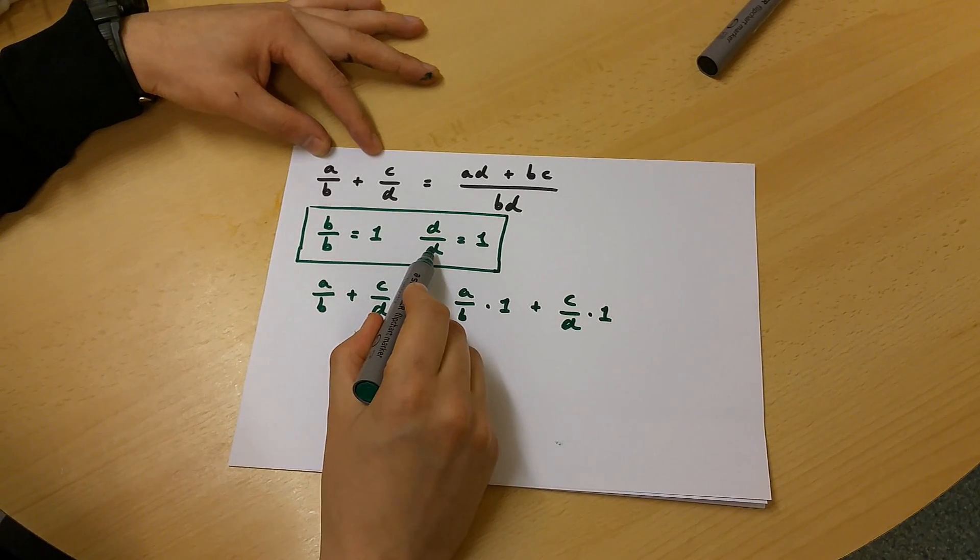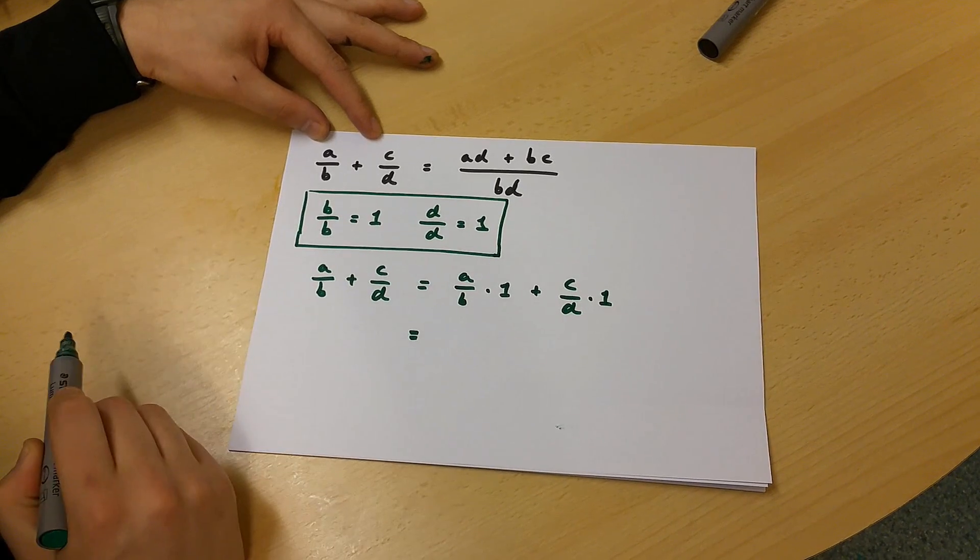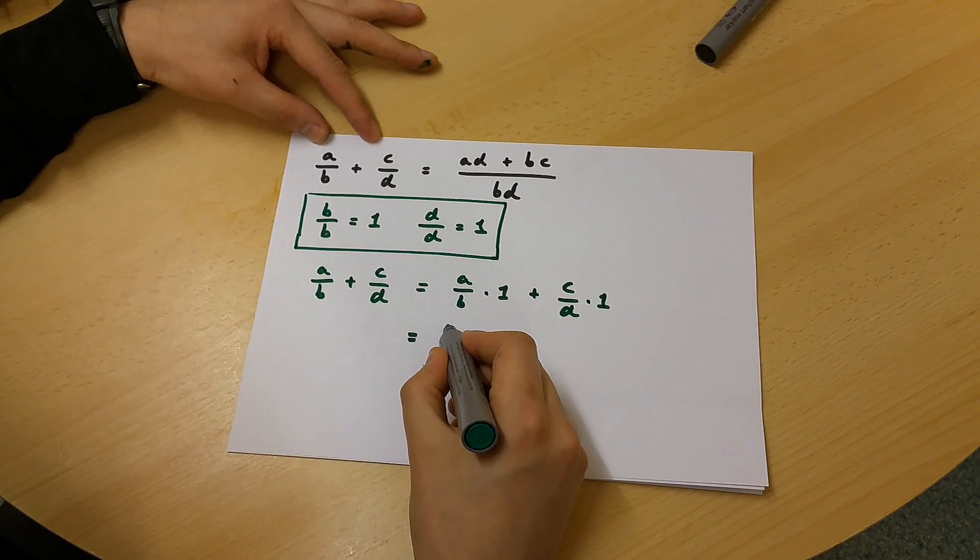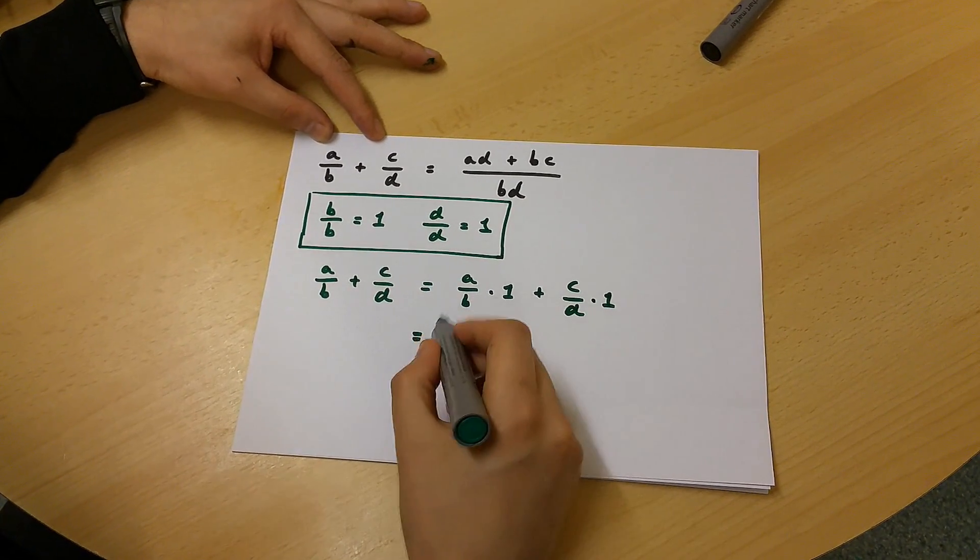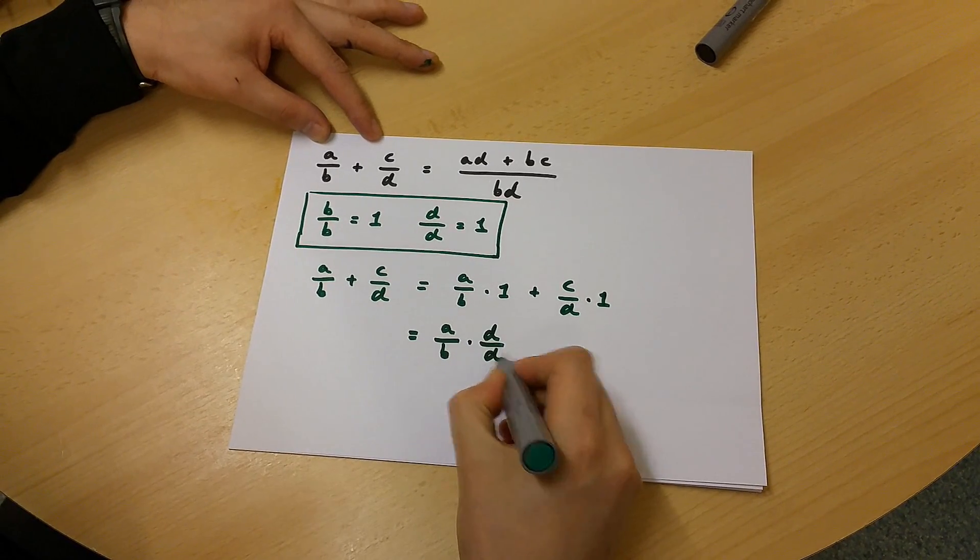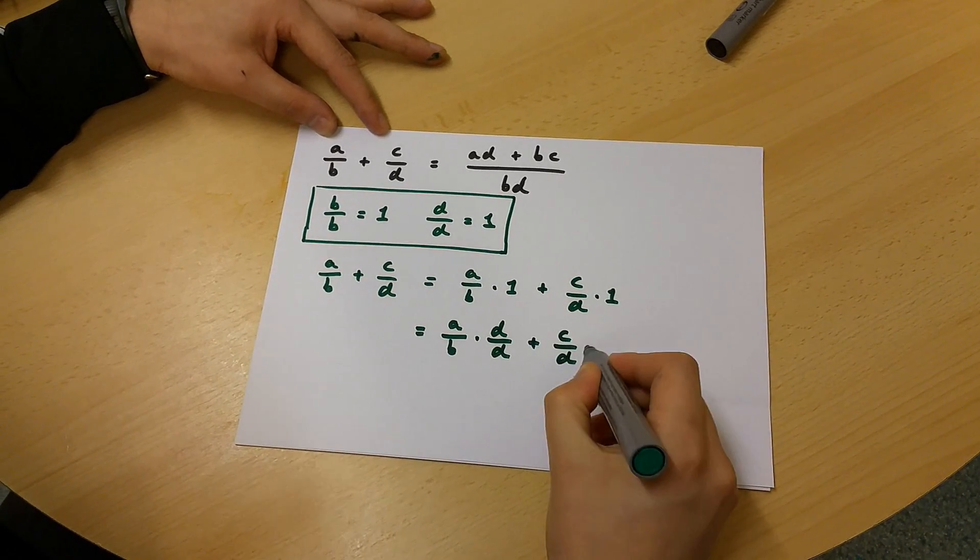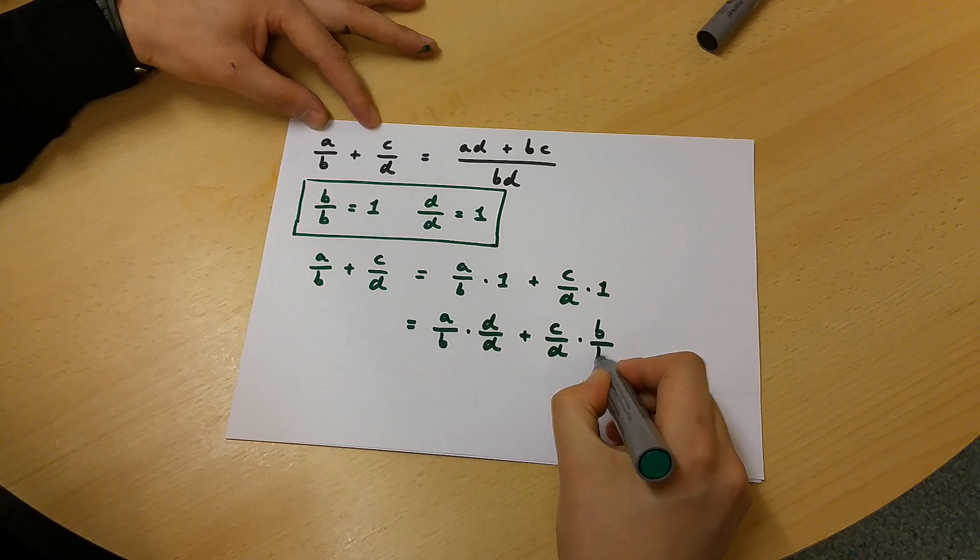But it turns out that D/D is equal to 1 and that B/B is equal to 1. So we can say that this over here is equal to A/B times D/D plus C/D times B/B.